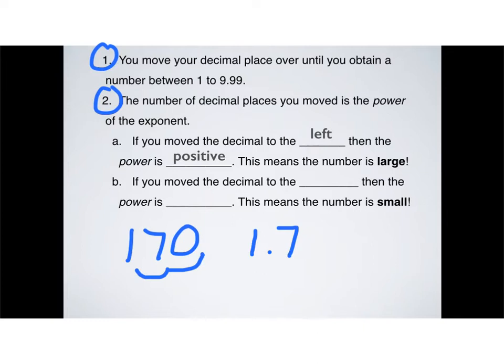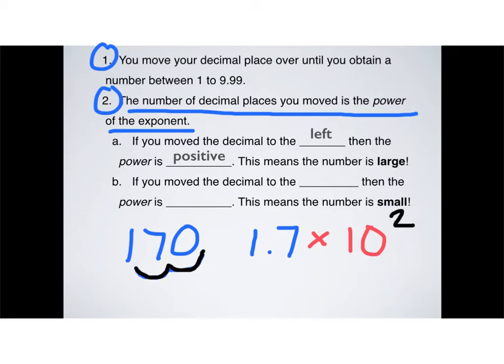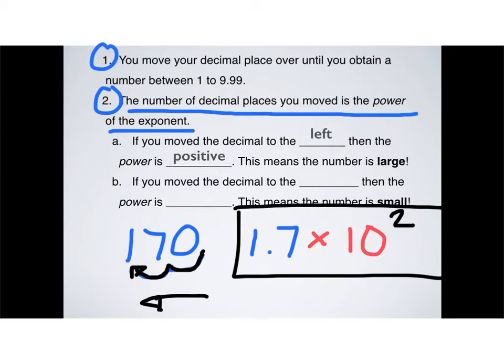Now, I moved my decimal place over two places. So, what does that tell me? Well, the number of decimal places you move is the power of your exponent. So, I have 1.7, and I always have times 10, and I raise it to a power. In this situation, the power is 2. Why? Because, as you can see right here, I moved my decimal place over two spots. And so, if you move your decimal place to the left, which is exactly what I just did, that means that my exponent is positive. So, 1.7 times 10 to the 2 is how I would write 170 in scientific notation.